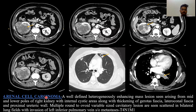Fourth case: Renal cell carcinoma. There is a well-defined heterogeneously enhancing mass lesion seen arising from the mid and lower pole of the right kidney with internal cystic areas, along with thickening of Gerota's fascia, lateral conal fascia, and proximal ureteric wall thickening. Multiple round to variable sized cavitatory lesions are seen scattered in bilateral lung fields with invasion of the left inferior pulmonary vein, likely metastasis. Staging: T4, N1, M1.